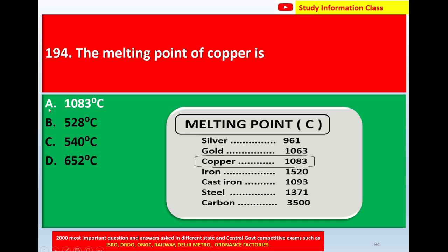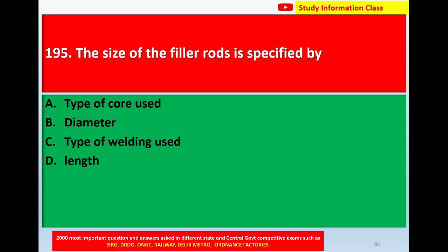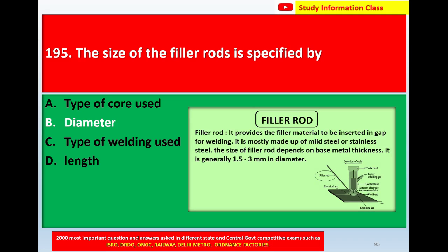For question number 194, the melting point of copper is the correct answer — 1083 degrees Celsius. Next, question number 195: the size of the filler rods is specified by. Option A: type of core used. Option B: diameter. Option C: type of welding used. Option D: length. The correct answer is diameter.